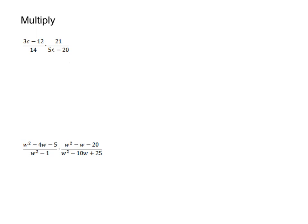Let's take a look at multiplying rational expressions. Just like simplifying, the first thing you want to do is factor anything you can. I look up here and I can see there's a GCF of 3, and then down here in the denominator of the second one there's a GCF of 5. So we're going to start by factoring everything we can.